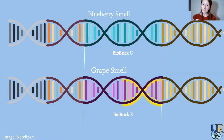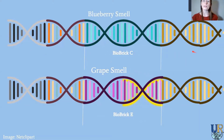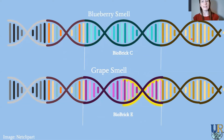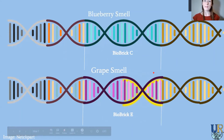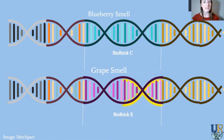To really drive this idea home, here's the initial DNA segment from two slides ago — biobricks A, B, C, and D. What I did is cut out biobrick C and replaced it with biobrick E. So now instead of producing a blueberry smell, I'm producing a grape smell. We were only able to do this cutting and pasting because these are biobricks and they're standardized.